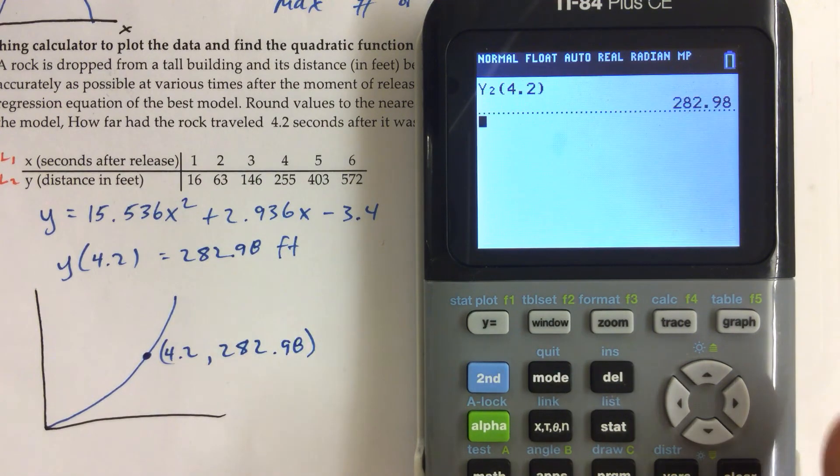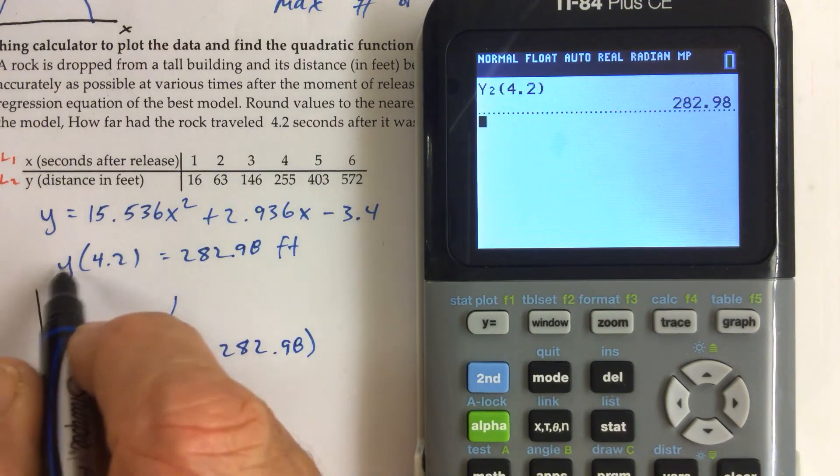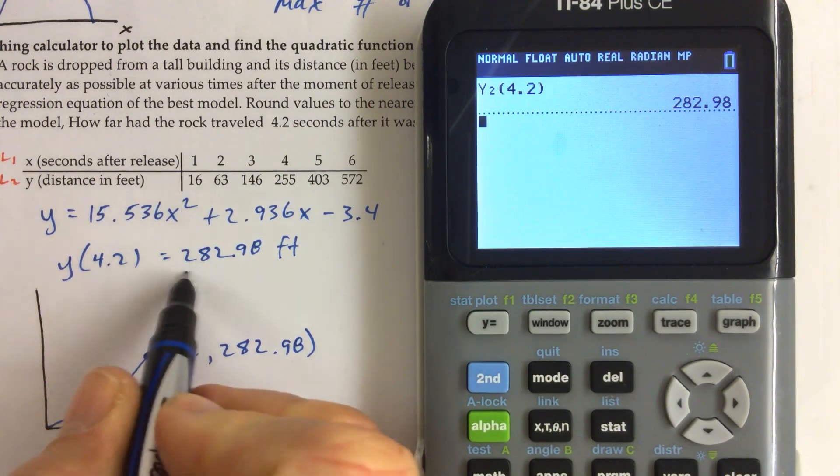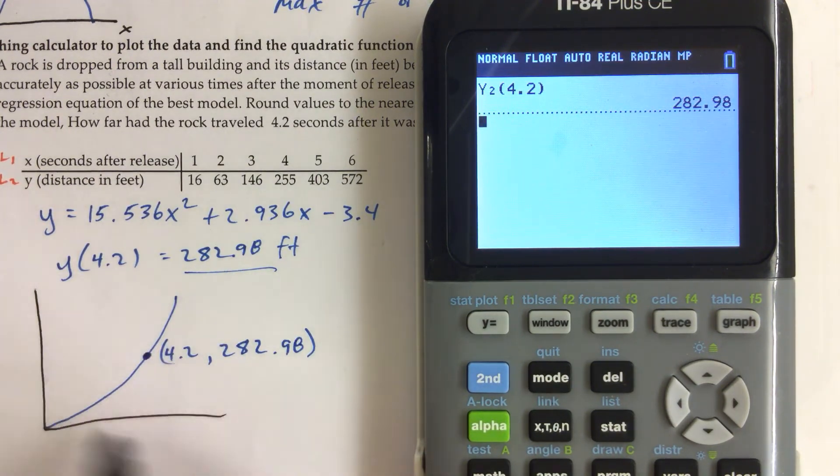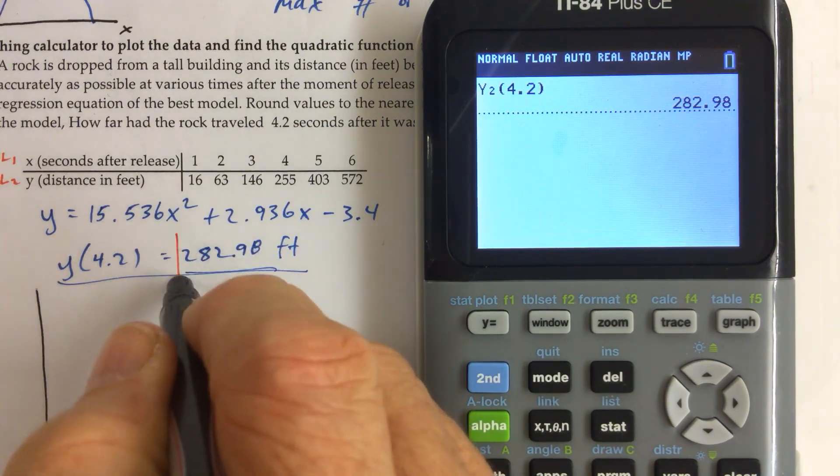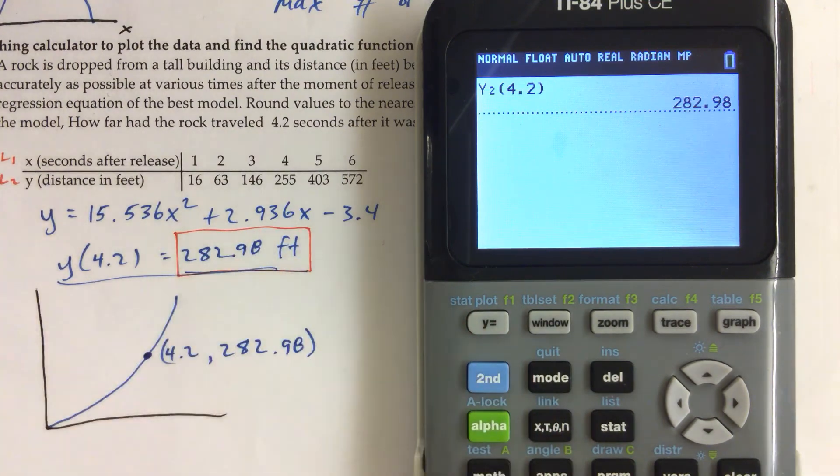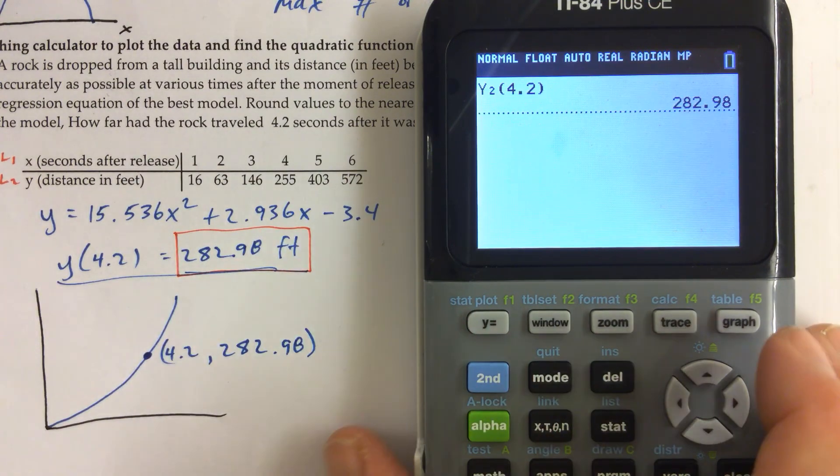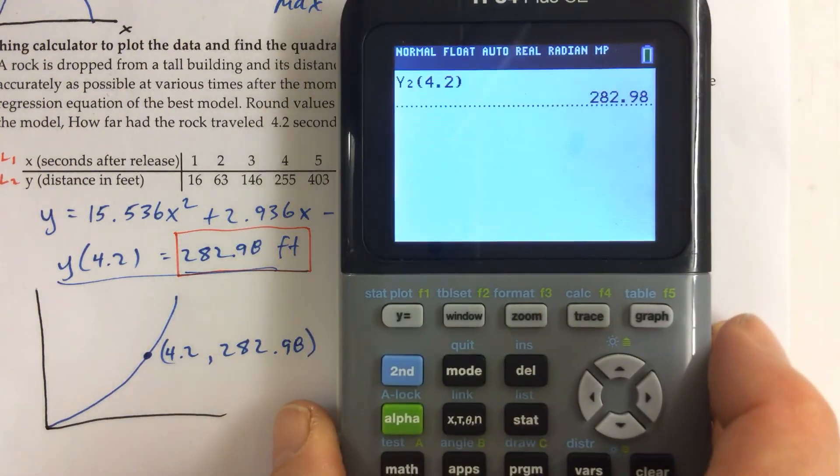And you can write like that. Y of 4.2 equals that. And either drawing the graph or writing that equation right there gets you full credit. But nevertheless, that's how far the rock traveled at the 4.2 seconds after it was released.